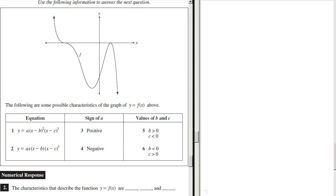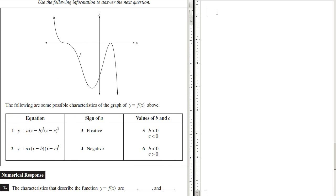Alright, so we have a graph here. We need to figure some things out about it. The characteristics that describe the function y equals f(x) are something, something, and something. Alright, so we notice that this is a quintic equation. It goes down, then it inflects, then it goes down, then up, then down.